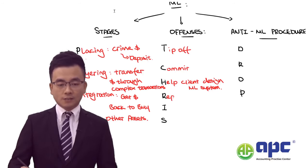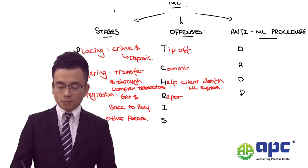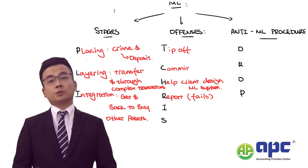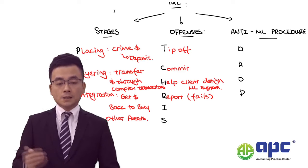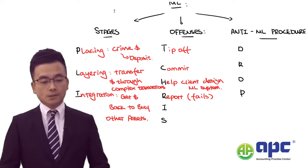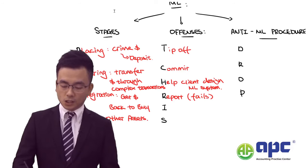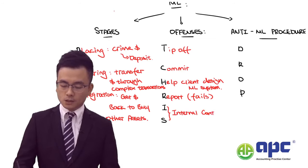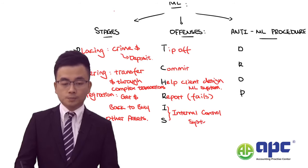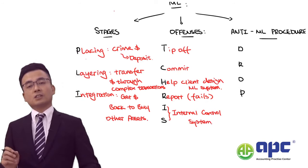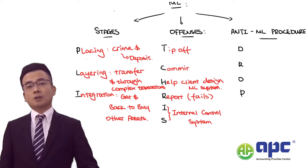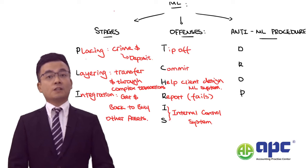The letter R in P-CHRIS stands for: if you find any money laundering activities, you must report them to the money laundering reporting officer (MLRO) on a timely basis. The next letter I stands for internal control system — you must have an adequate internal control system in place to identify and report money laundering activities on a timely basis. If you fail to have those internal control systems in place, you will be sued, as that constitutes one of the offences.